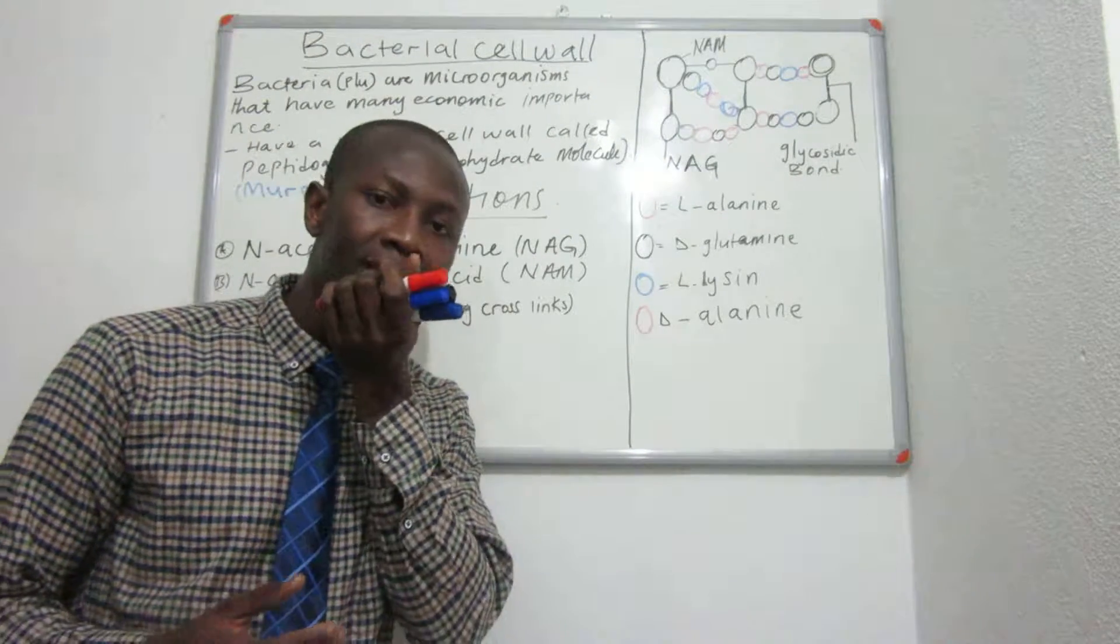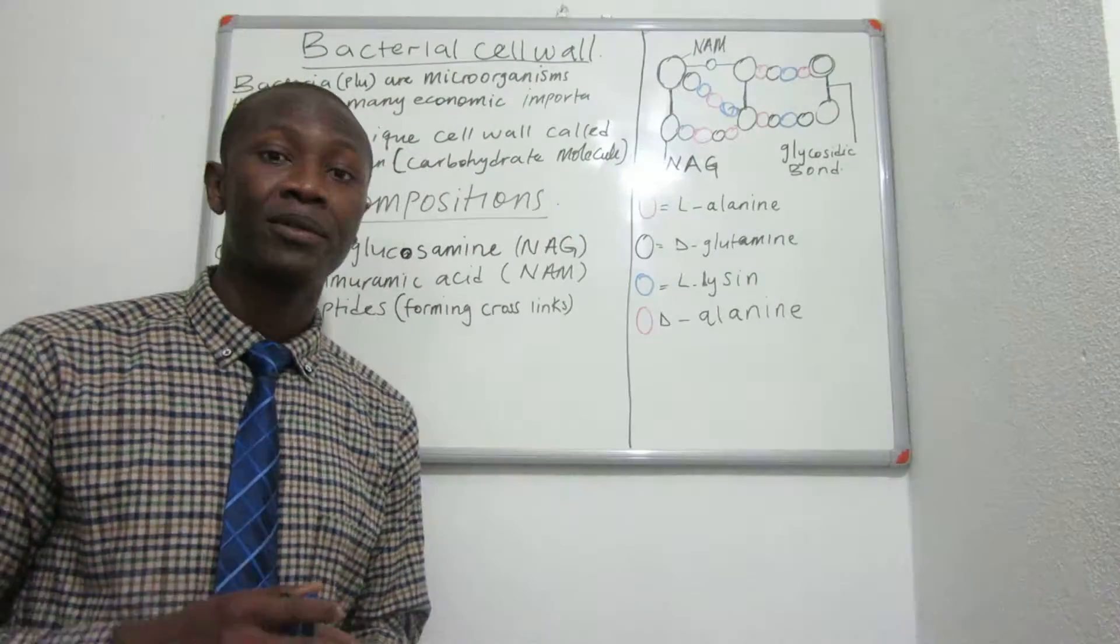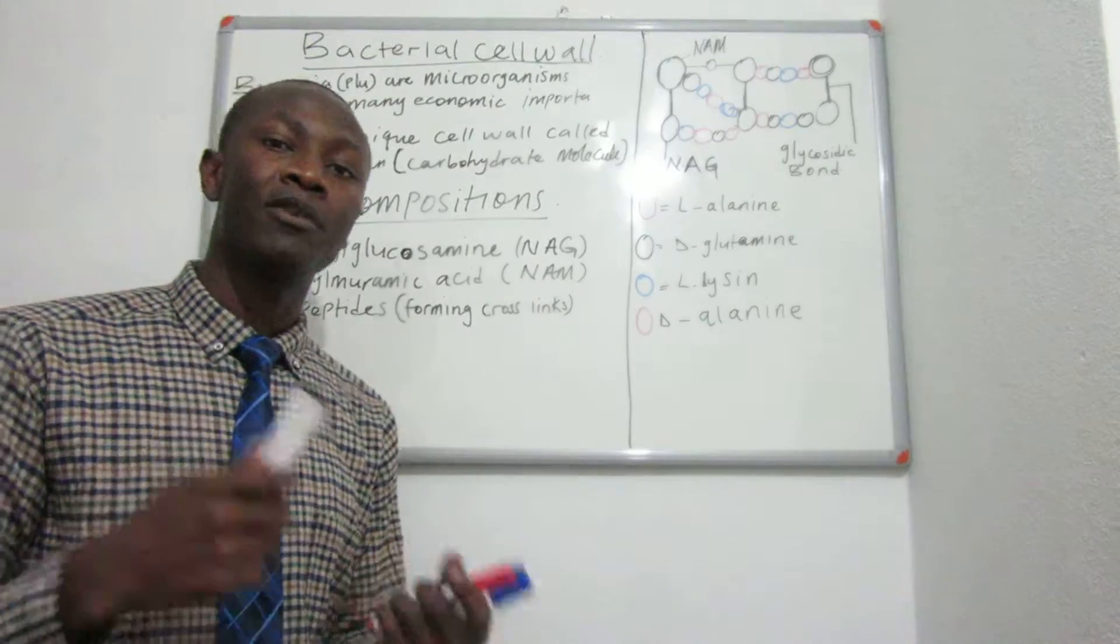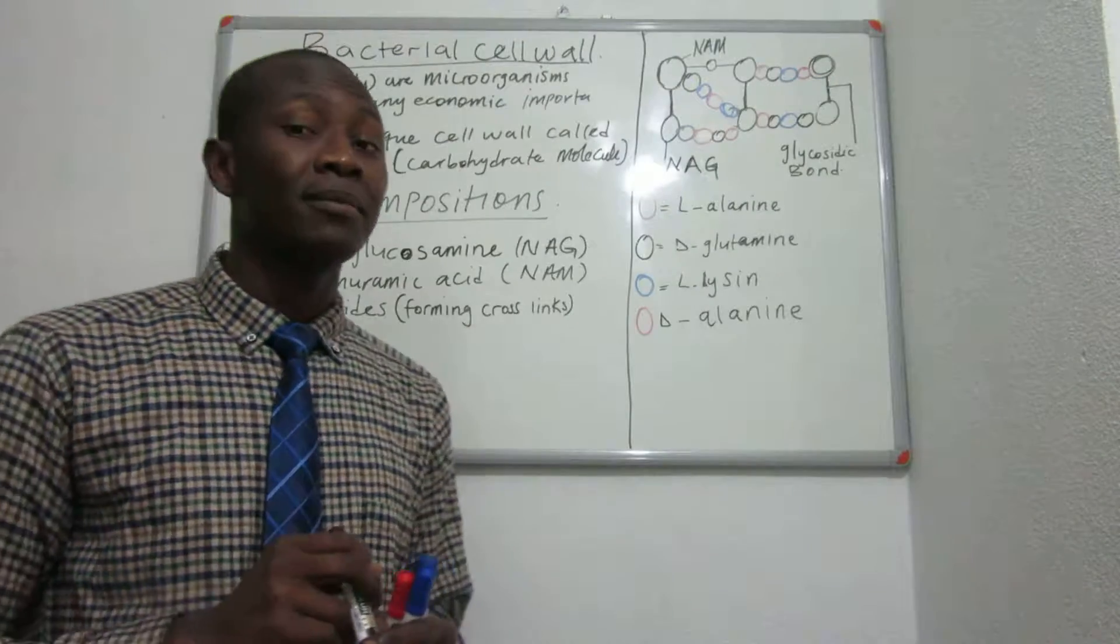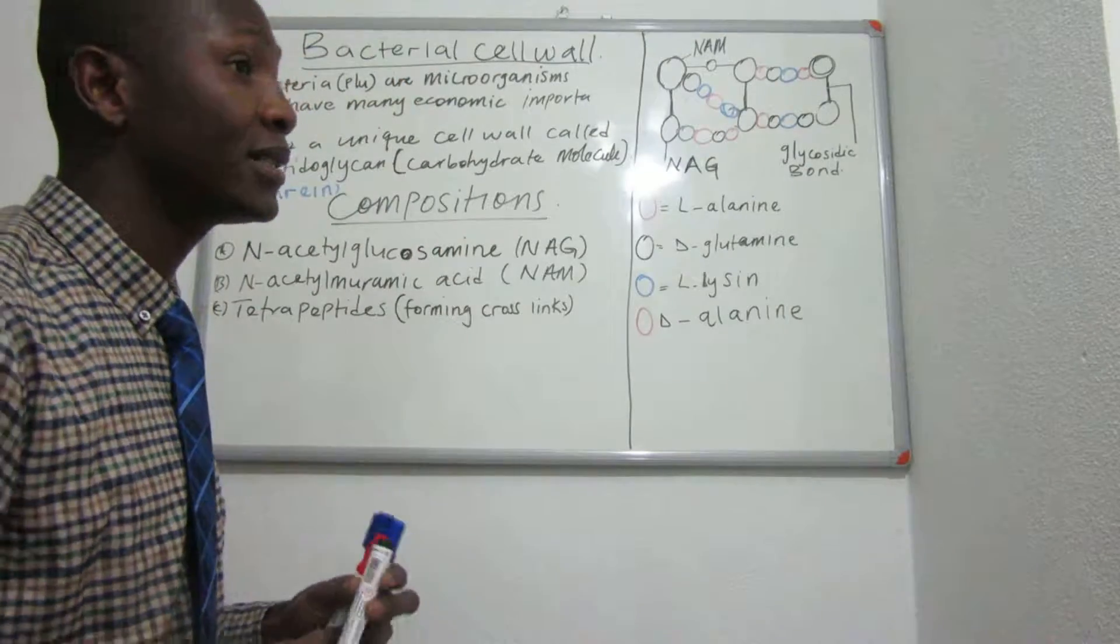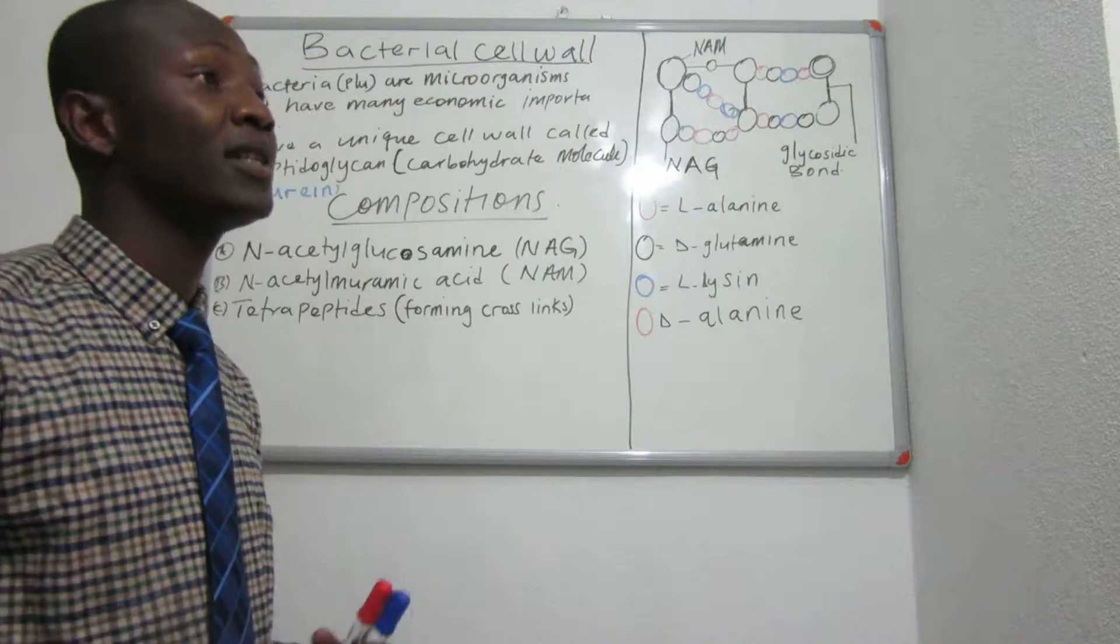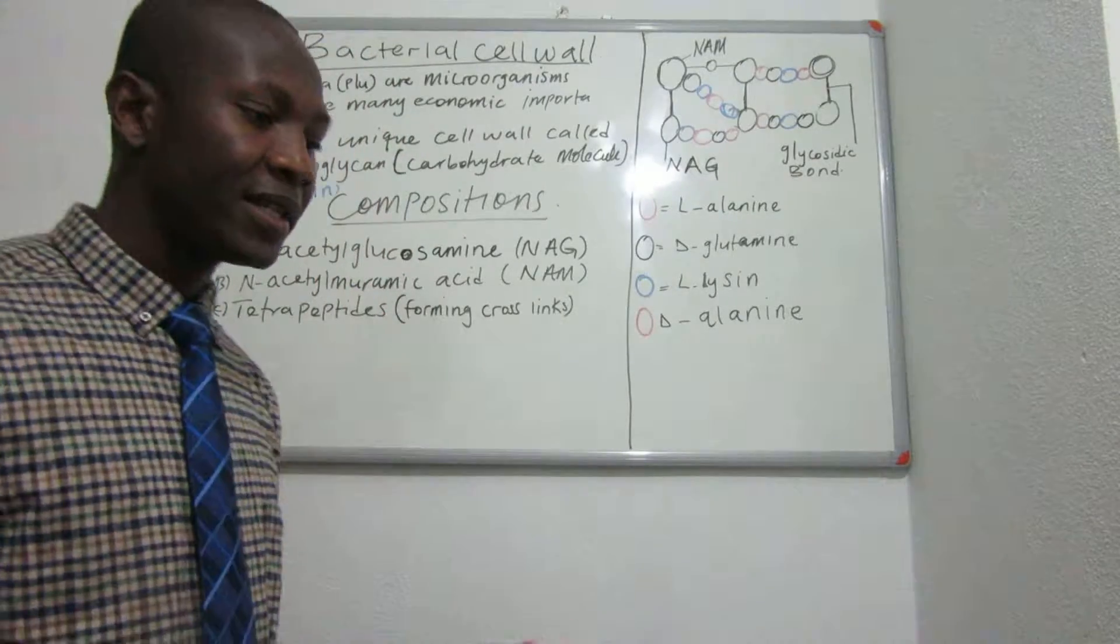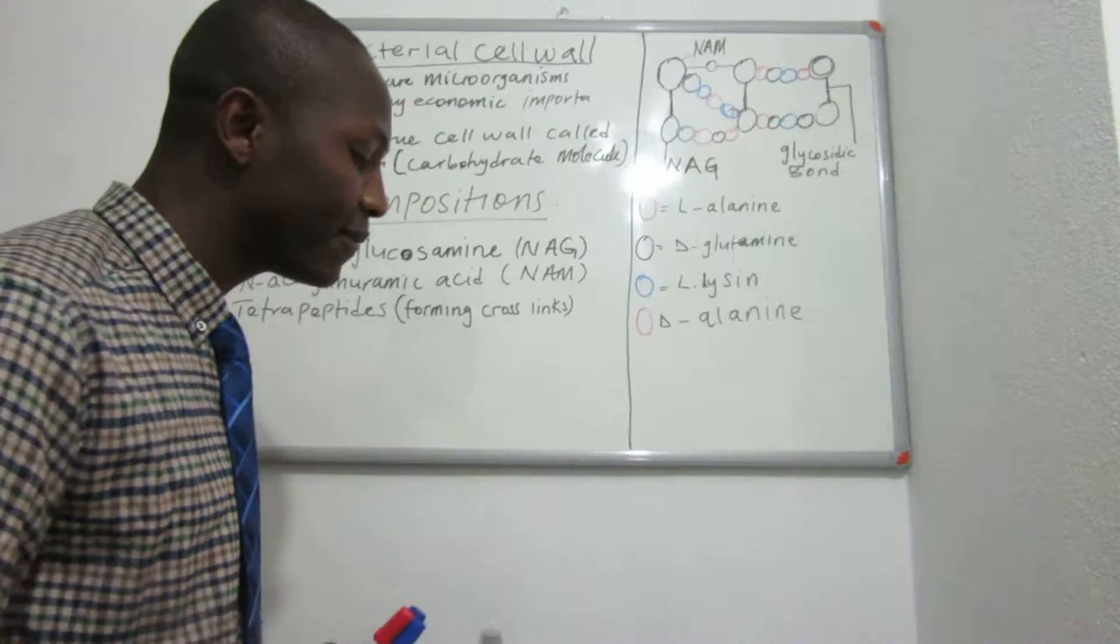Bacteria are organisms that play a very important role in our ecosystem, ranging from both positive and negative impacts in society. Why is it so special to discuss the cell wall structure of bacteria and not the cell wall structures of plants? Bacteria play an important role, ranging from positive and negative.